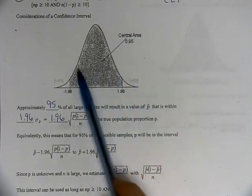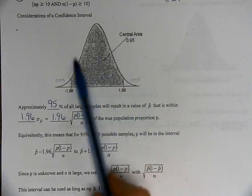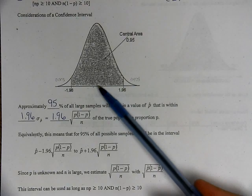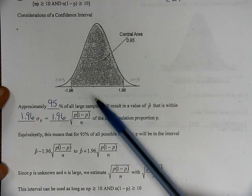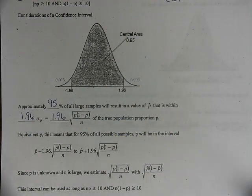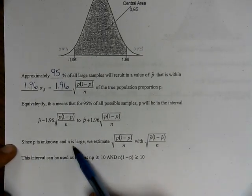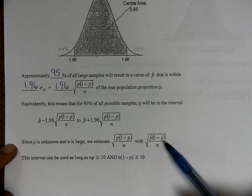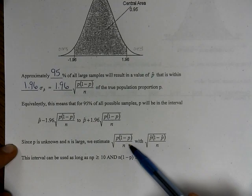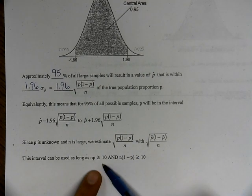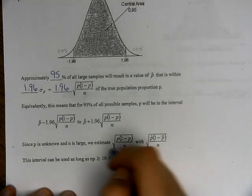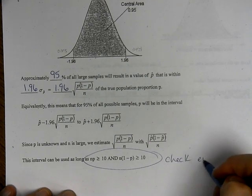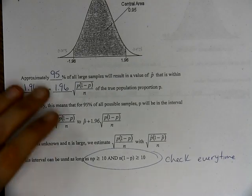Somewhere in this interval, 95% of the time, you'll capture that true population proportion. If it's supposed to be like 50%, 95% of the time that interval will capture that 50%. You may have that 5% where it doesn't capture it, and that's kind of like your margin of error. If p is unknown and n is large, we estimate the standard deviation using p-hat, as long as n times p-hat is greater than or equal to 10 and n times 1 minus p-hat is greater than or equal to 10. This is what we have to check every time — we did that first semester in chapter 8.